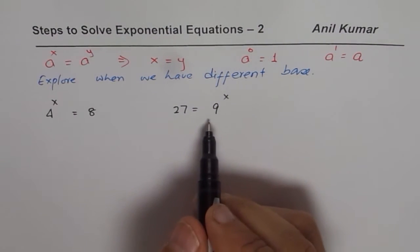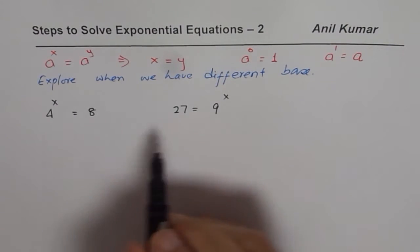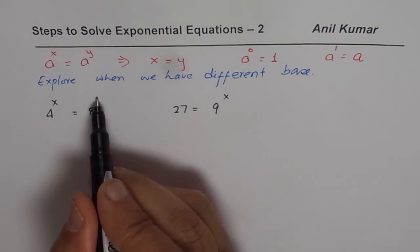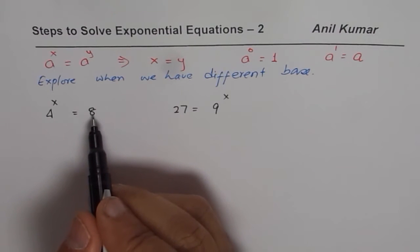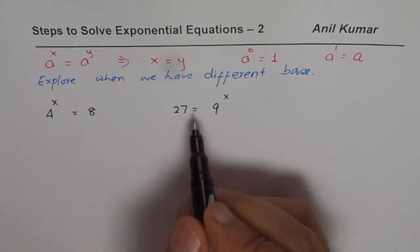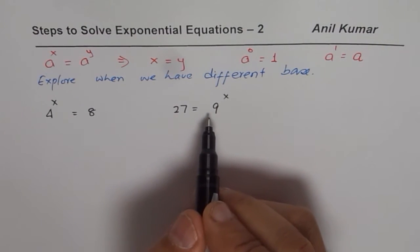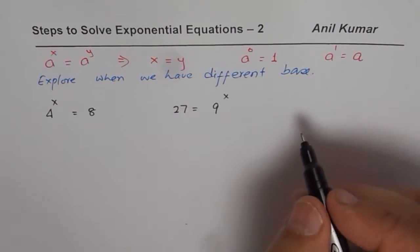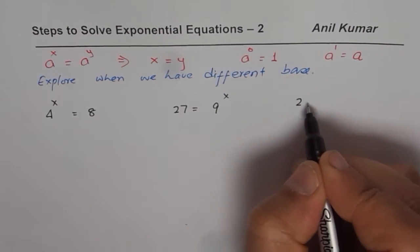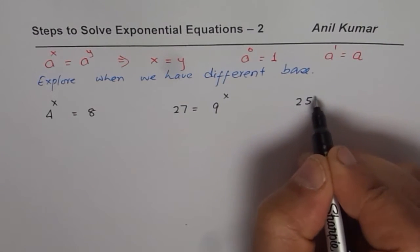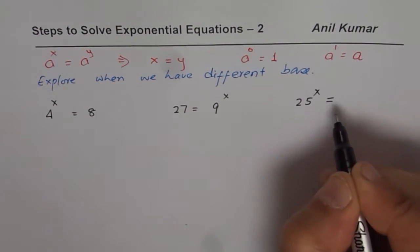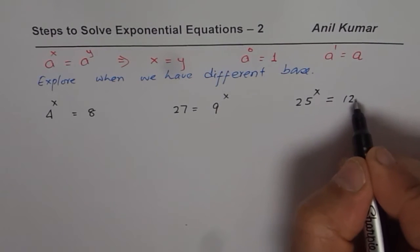And I cannot write 8 as 4 to the power of anything. 4 to the power of 2 is 16, not 8. Here also, I cannot write 27 as 9 to the power of anything. That makes it different from the equations which we had taken up in part 1. So that is how this video is one step higher than what we learned in the previous video. So progressively, we will learn more.